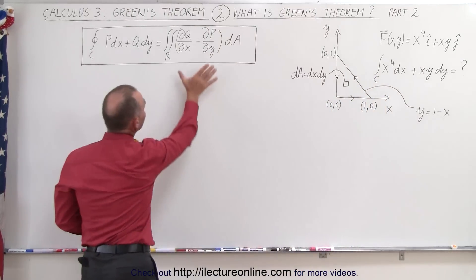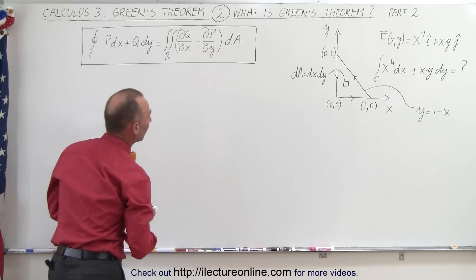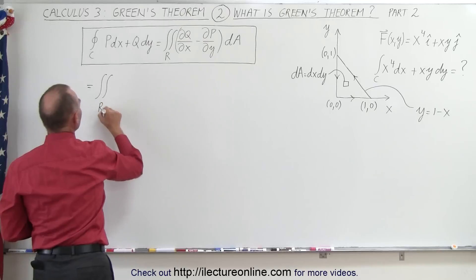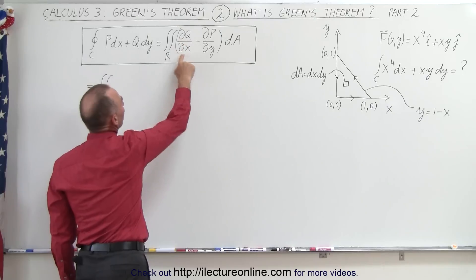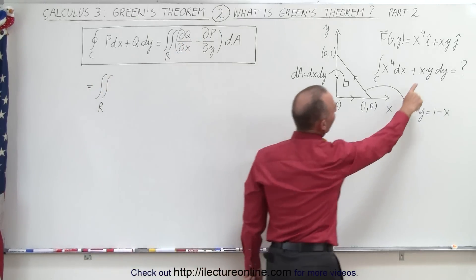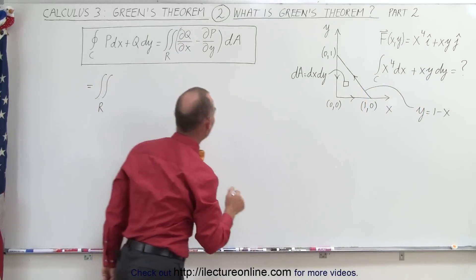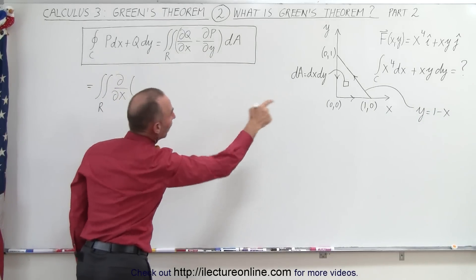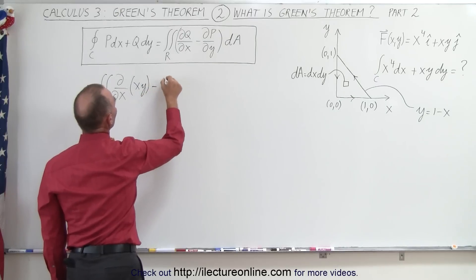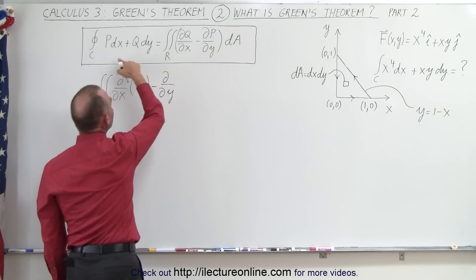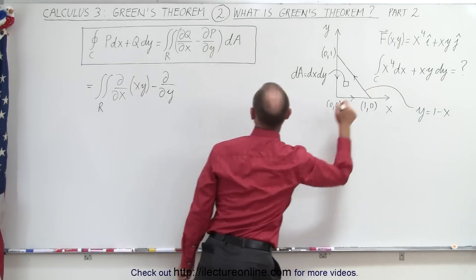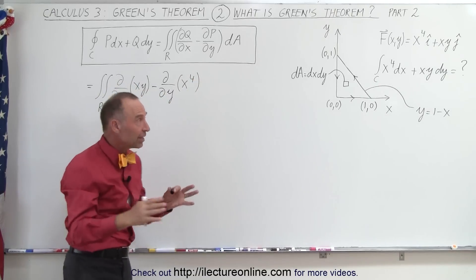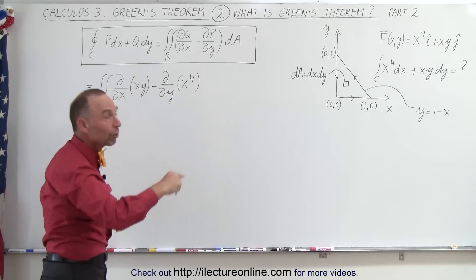But we can do that instead by taking the right side of Green's theorem. This line integral can be expressed as the double integral over the region of the partial of Q with respect to x. Q is xy, so we're going to take the partial of xy with respect to x, minus the partial with respect to y of P. The integrand is very much defined by the vector field in that region over which we do the line integral.